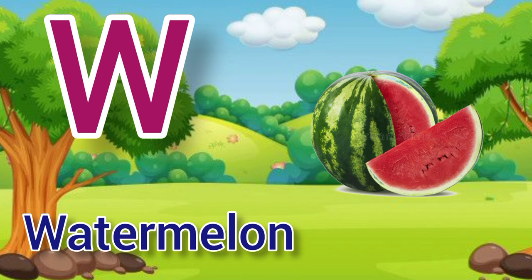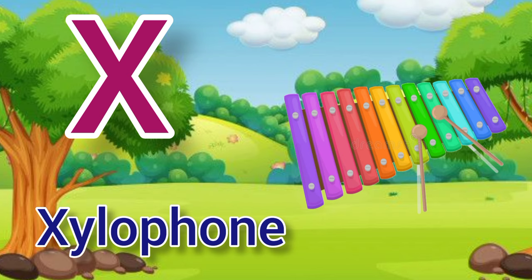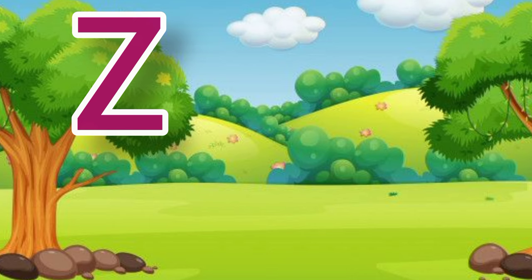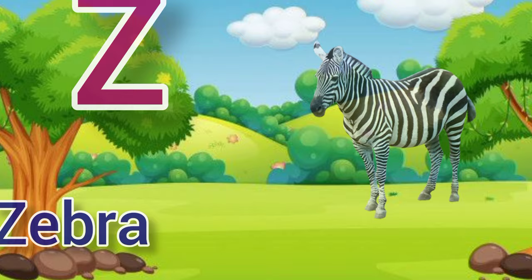X. X for xylophone, xylophone means xylophone. Y. Y for yarn, yarn means dhaga. Z. Z for zebra, zebra means chithidhar ghoda.